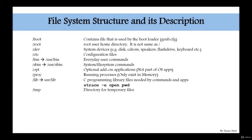/tmp is the directory used for temporary files. It has no major significance, but you can create temporary files there that you plan to delete later. /home is for regular users — when you create a regular account on a Linux system, your home directory is created under /home. /var is used for system logs; every time your operating system or an application writes logs, they go into /var.